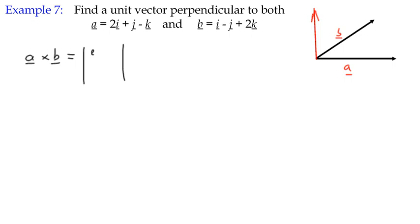We construct our 3x3 matrix, i, j, k. We're doing A cross B. It doesn't really matter. As we're going to see, we're going to have two answers anyway, because one solution will be effectively in this diagram pointing up, and the other one would be pointing down if these were on a horizontal plane. So we've got 2, 1, negative 1, and we've got 1, negative 1, 2.